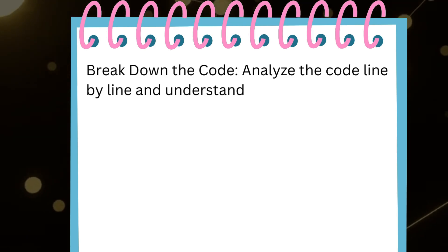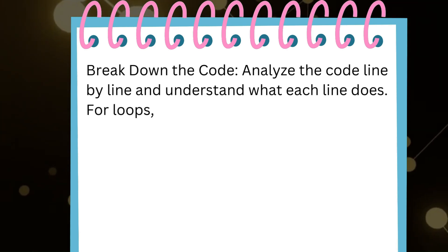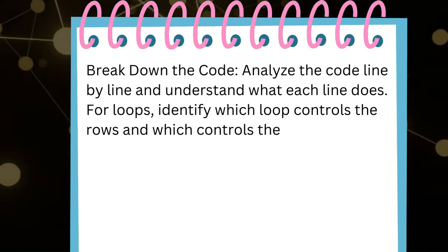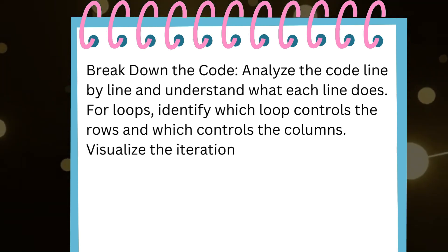Break down the code. Analyze the code line by line and understand what each line does. For loops, identify which loop controls the rows and which controls the columns. Visualize the iteration process.